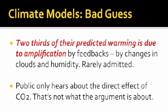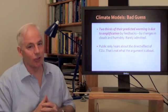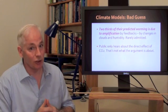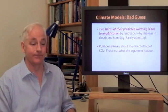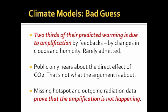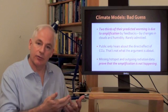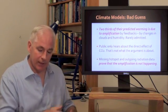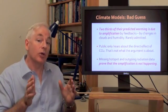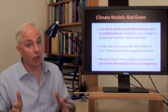They rarely admit that in public — they'll admit it if you ask them, it's not a secret — but what you hear about in public is the direct effect of CO2. Well, only a third of it is due to CO2; the other two-thirds is based on a guess about what happens to clouds and humidity, and that's the bit for which there's no evidence and it's a lot more uncertain. That's what the argument is about. The missing hotspot and the outgoing radiation both independently show that that amplification is not happening at all. The hotspot is due to the amplification — the changes in the clouds and the humidity — and it simply isn't there. And the outgoing radiation shows that the climate models, with their three-fold amplification, are trapping heat far too aggressively. So if there's no amplification, two-thirds of the predicted warming goes away, which helps explain why the climate models overestimate air temperature and ocean temperature increases.